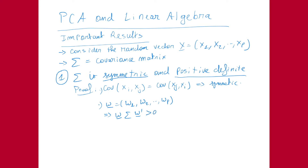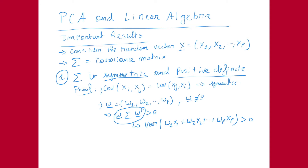This expression is the variance of w1·X1 plus w2·X2, all the way to wP·XP, and we know that a variance is always positive. It is a strict inequality because we assume that W is not equal to zero.